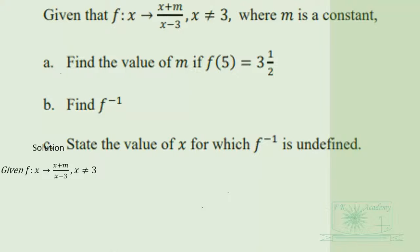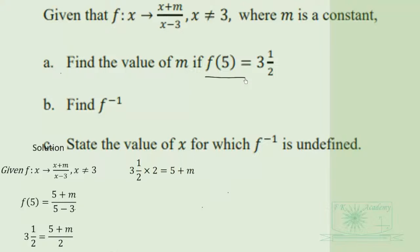We substitute x equals 5: f(5) equals (10 + m) over (5 minus 3), which simplifies to (5 + m) over 2. We are given f(5) equals 3 and a half, so multiplying both sides by 2 gives 7 equals 5 plus m, therefore m equals 2.